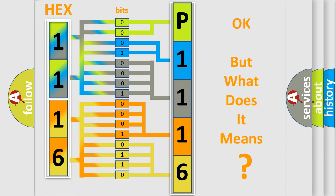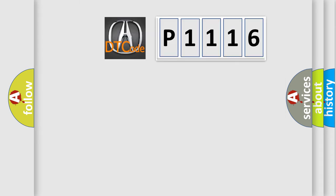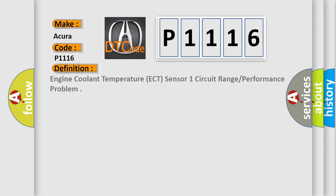We now know how the diagnostic tool translates received information into a more comprehensible format. The number itself does not make sense to us if we cannot assign information about what it actually expresses. So, what does the Diagnostic Trouble Code P1116 interpret specifically for car manufacturers? The basic definition is: Engine Coolant Temperature Sensor 1 Circuit Range Performance Problem.